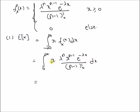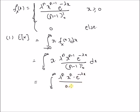By combining the two x terms — that is x and xⁿ⁻¹ — we have the integral from 0 to infinity of λⁿ · xⁿ · e^(−λx) / (n−1)! dx.